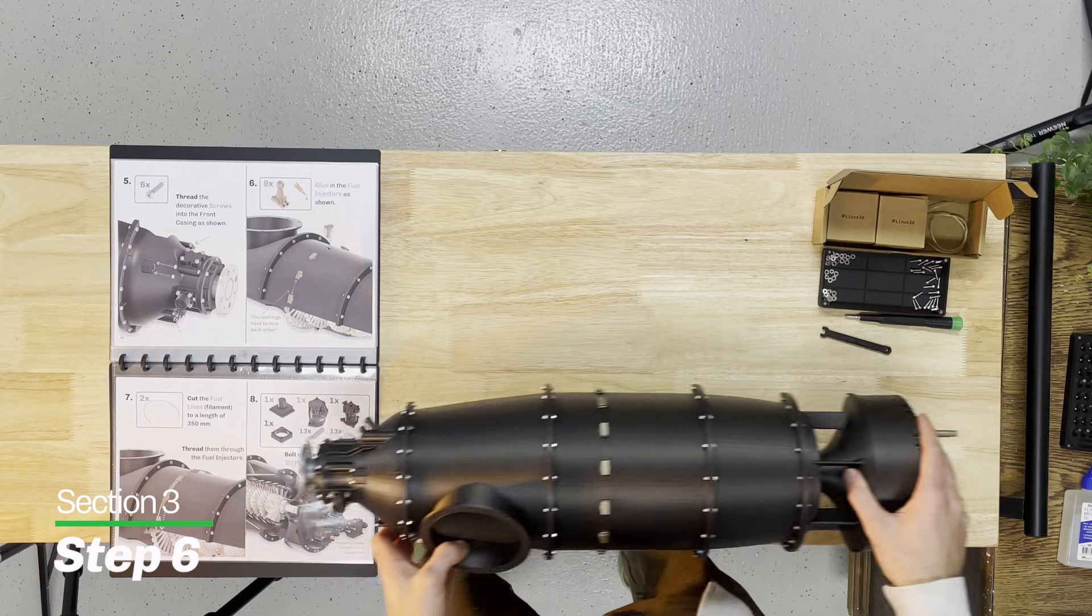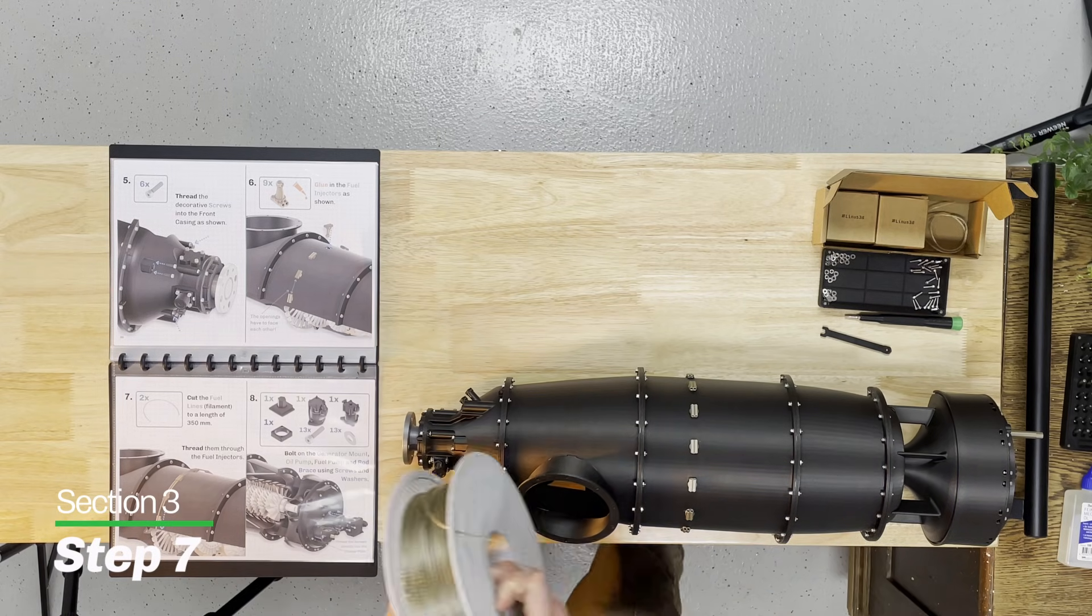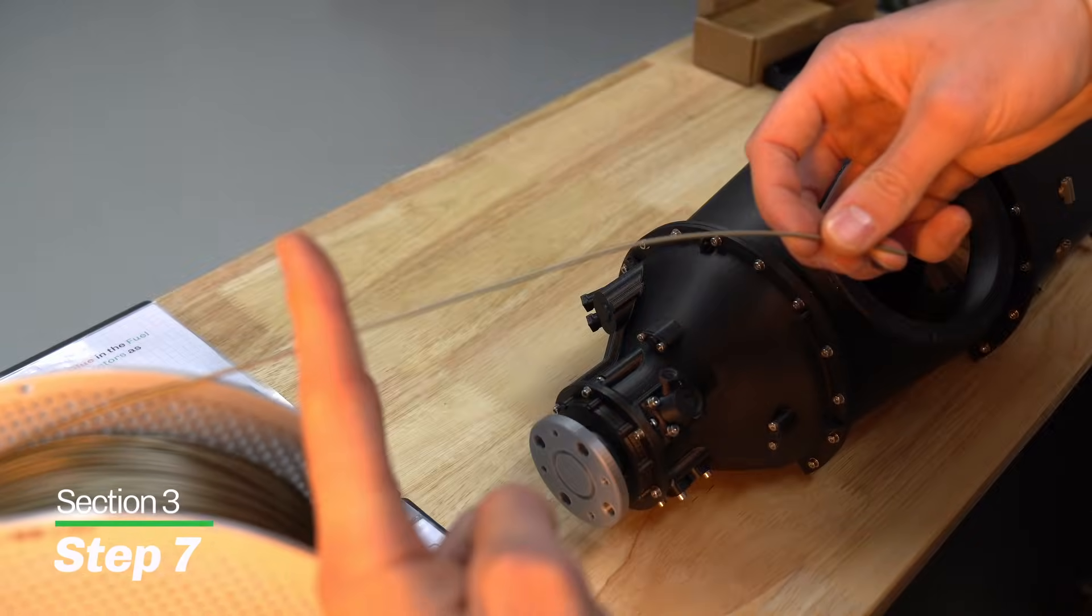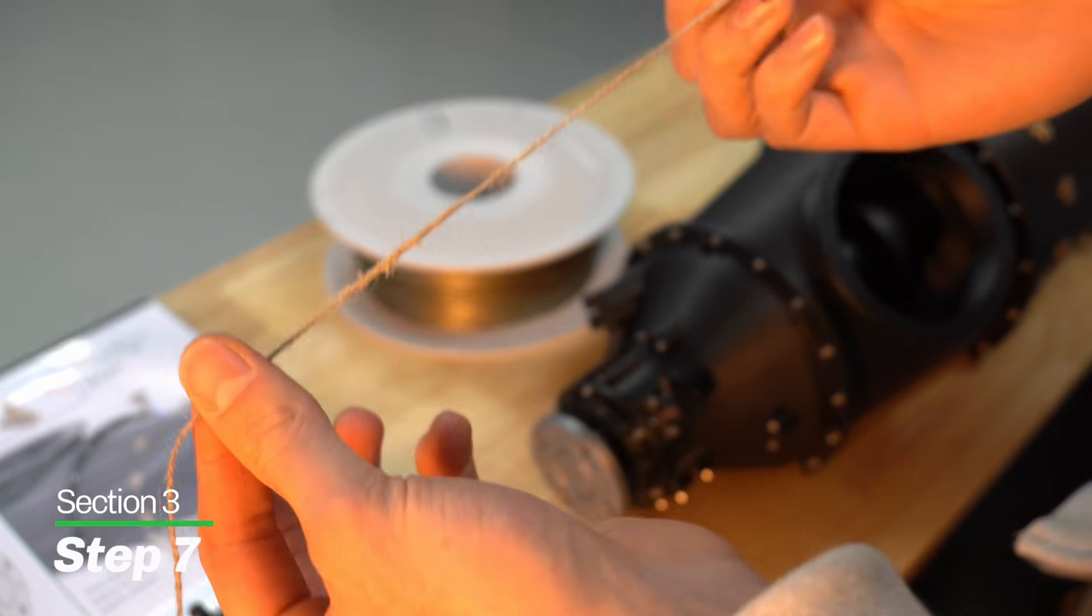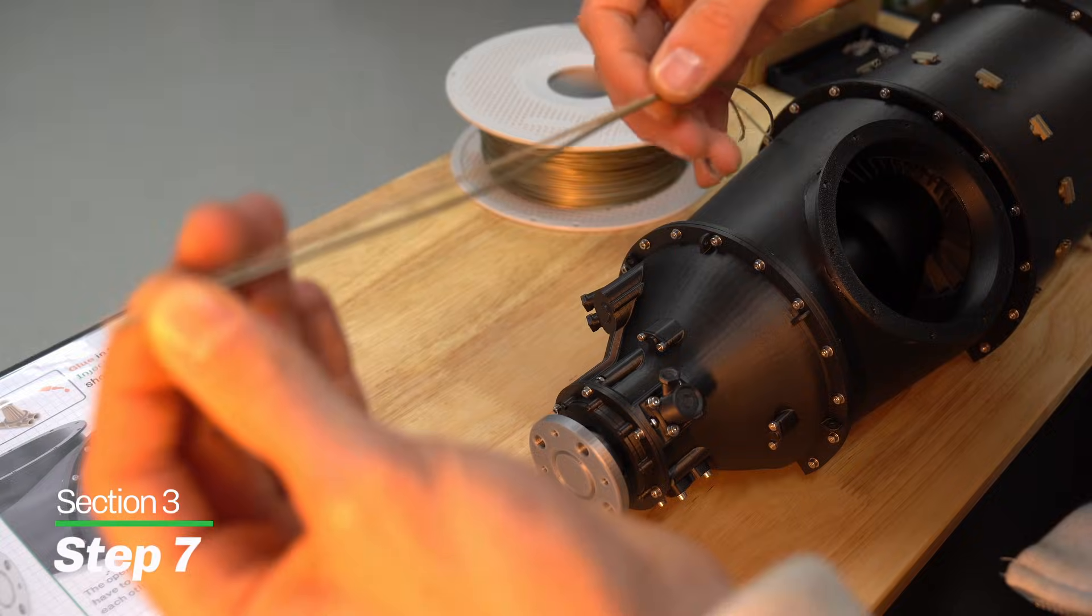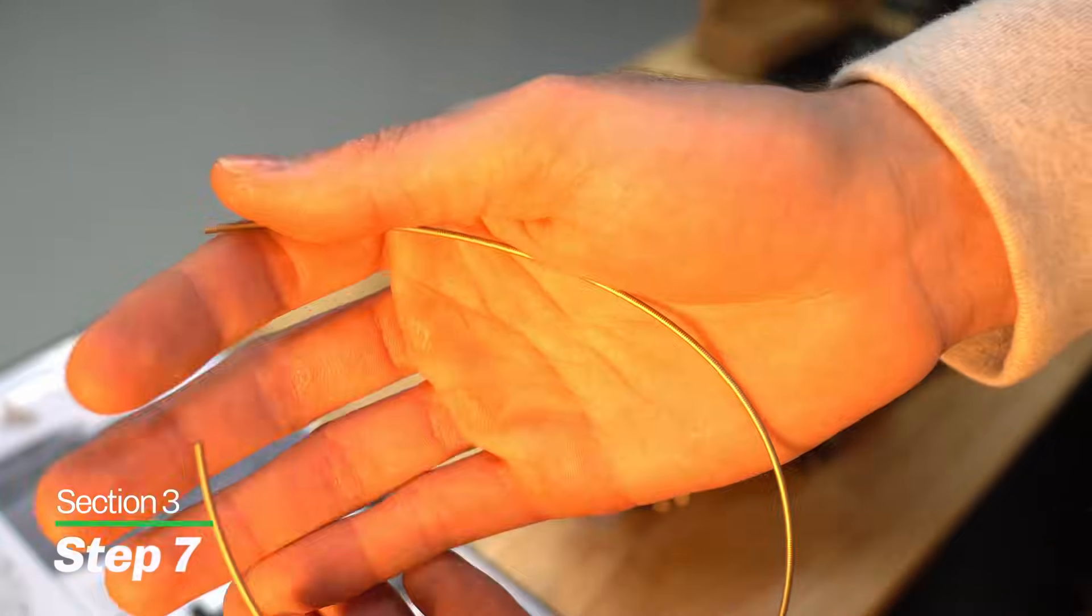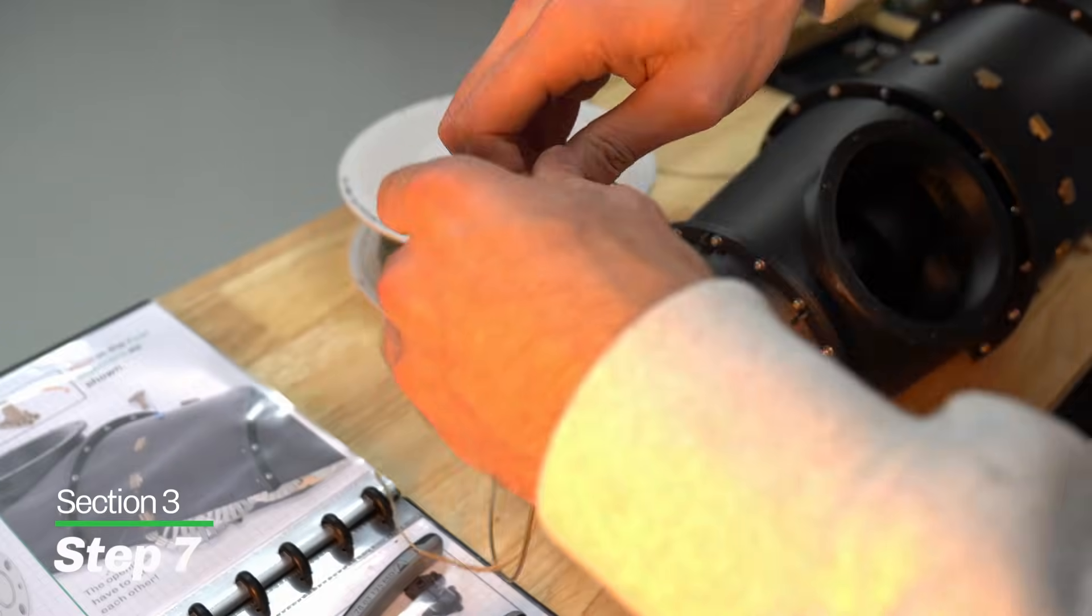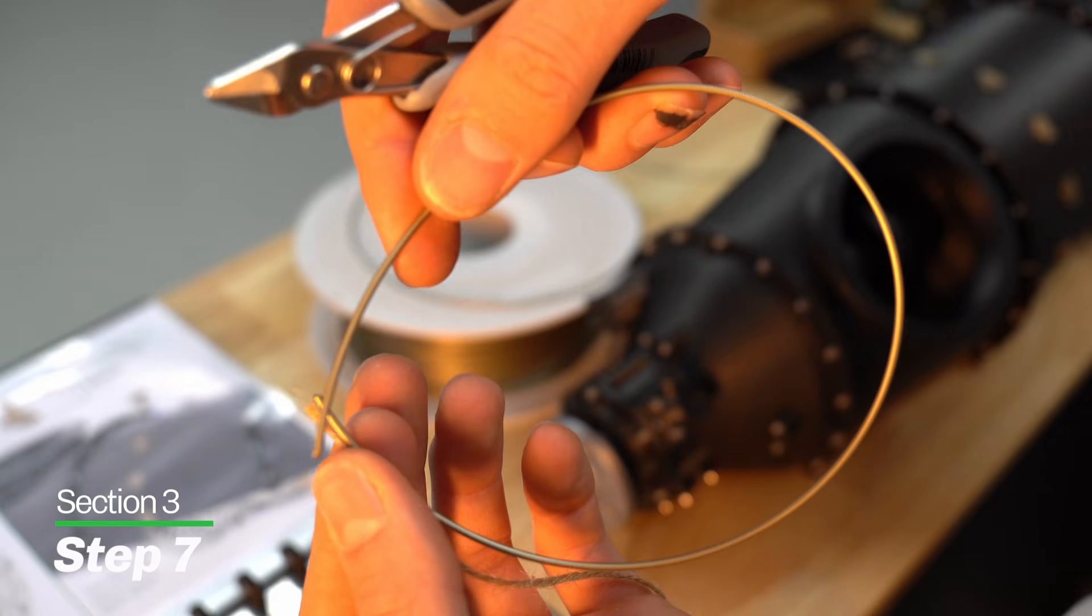After we have let this cure for a while, we're going to move on to step number seven, which is the fuel lines. Now we didn't print any fuel lines. You're going to have to grab your spool of filament, and you're going to cut 350 millimeters of this. If you're using my kit, now is the time to pull out the piece of yarn that was included that measures exactly 350 millimeters. We're going to use this yarn to measure out the 350 millimeters. Line the two ends up, and the end of the yarn is where we're going to make our cut. That is one of two fuel lines complete.